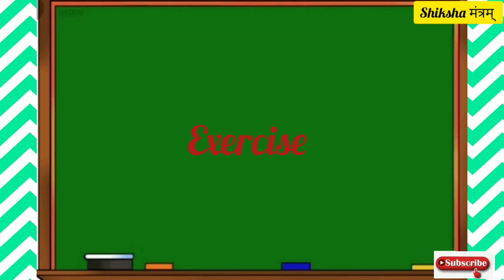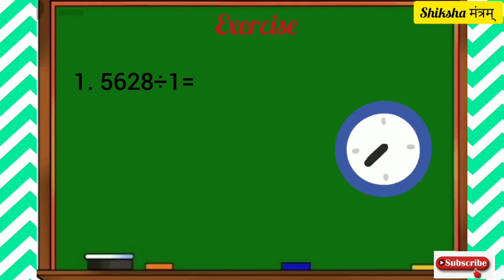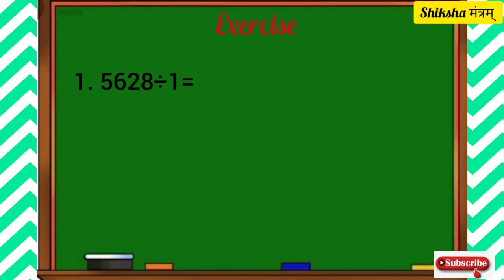Now let us revise all the properties of division through this exercise. Question number 1: 5,628 divided by 1 is equal to? The correct answer is 5,628, because a number divided by 1 gives the quotient as the number itself.